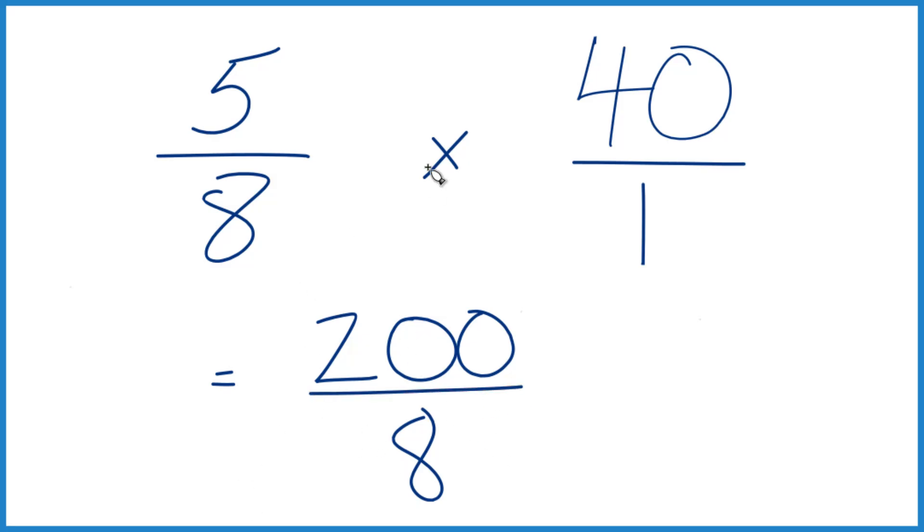So now we need to divide 200 by 8. So you could do this on a calculator or long division, and 8 goes into 200 25 times. So 25 times 8, that gives you 200.